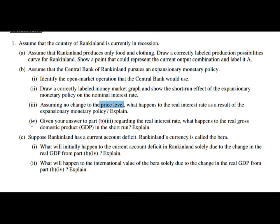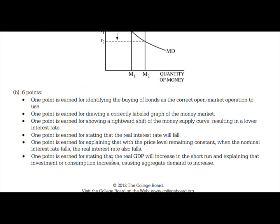Last but not least, given your answer in part B regarding the real interest rate, what happens to real gross domestic product in the short run? If interest rates are lower, then interest-sensitive consumption will probably increase. Thinking about the ADAS graph, you take the aggregate demand line and shift it to the right as a result of more interest-sensitive consumption — then real GDP should increase as well. The rubric says one point is earned for stating that real GDP will increase, explaining that either investment or consumption increases, causing aggregate demand to increase.